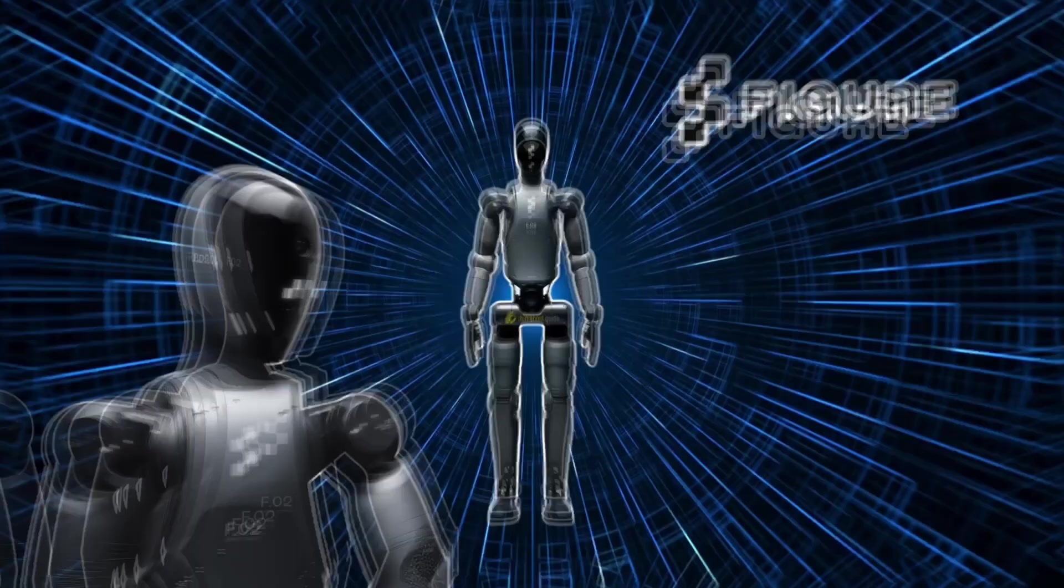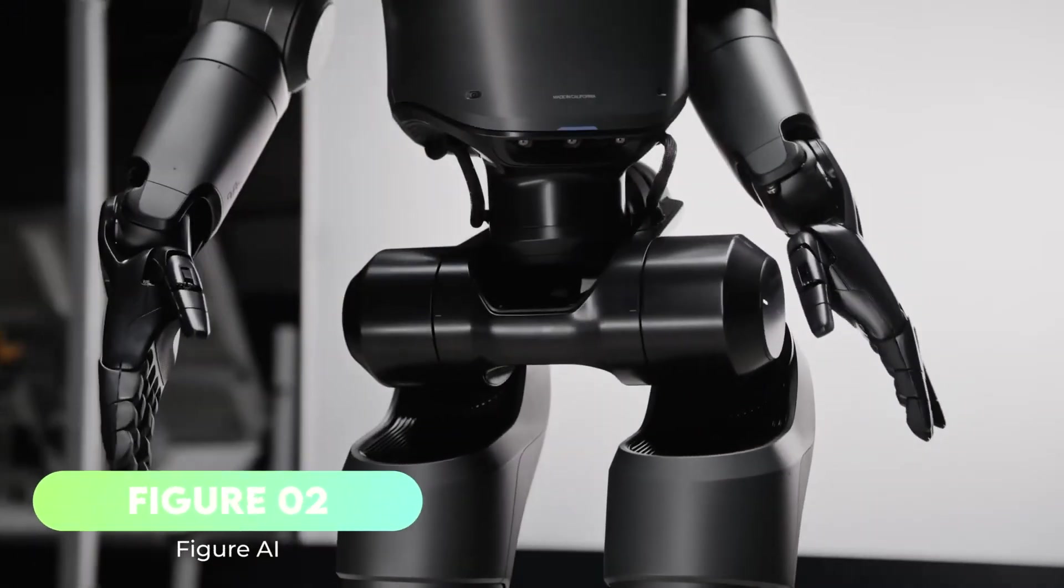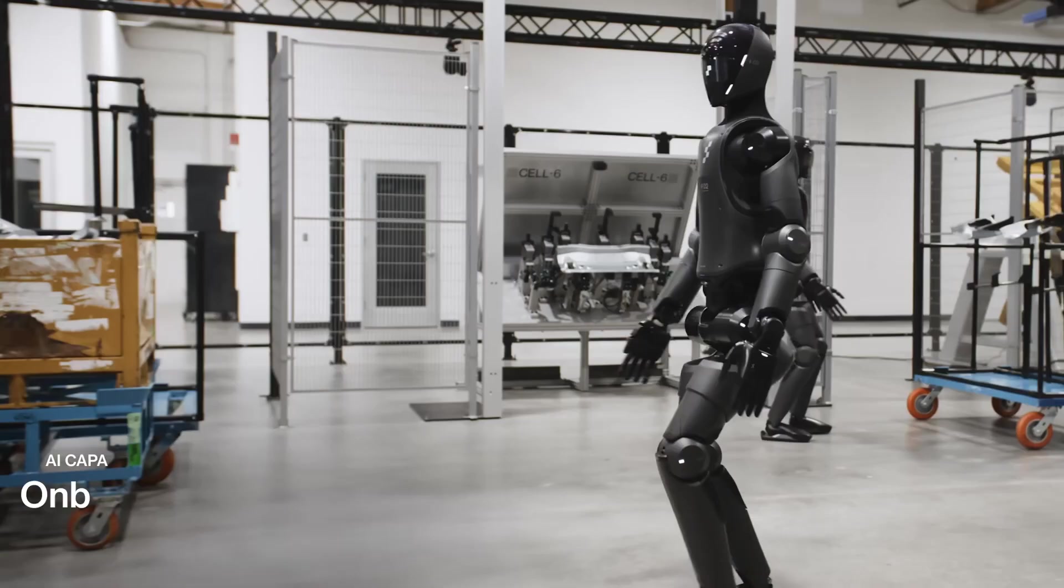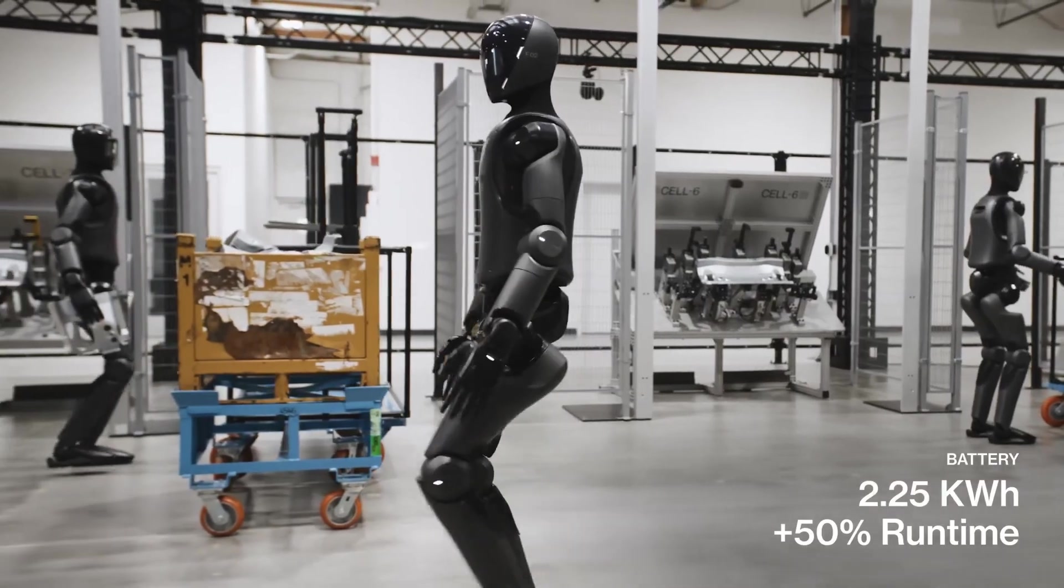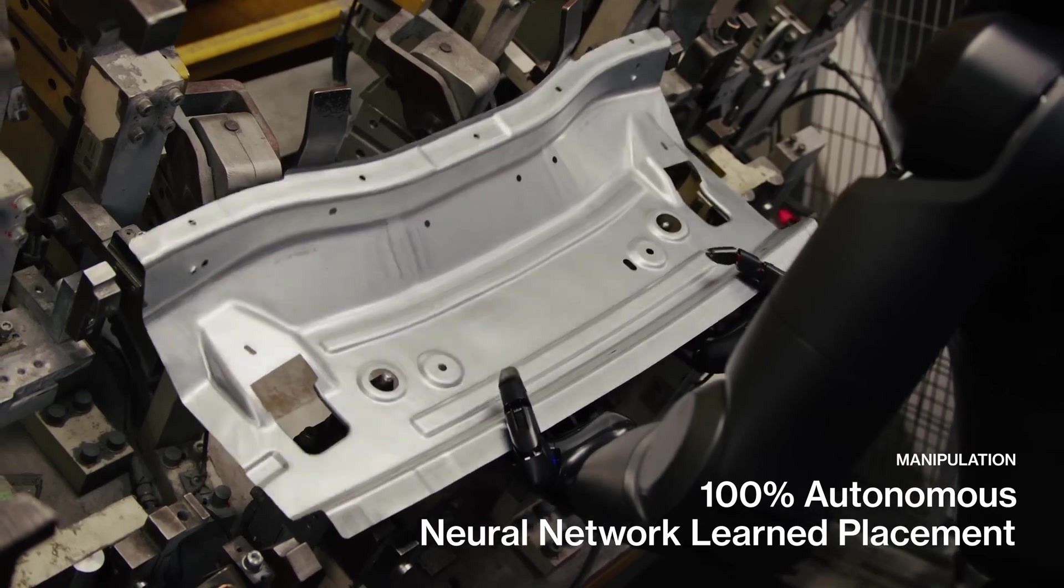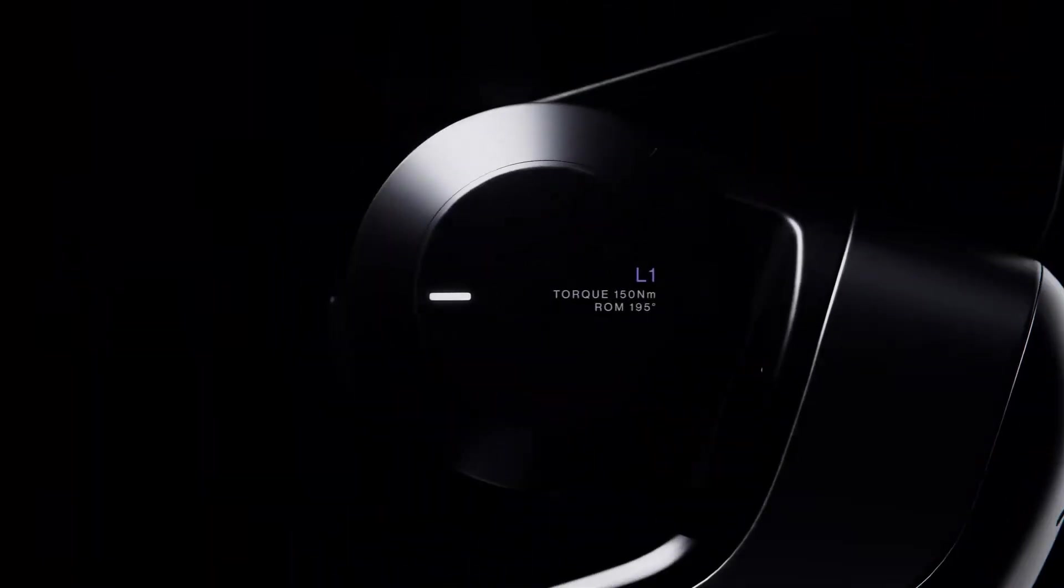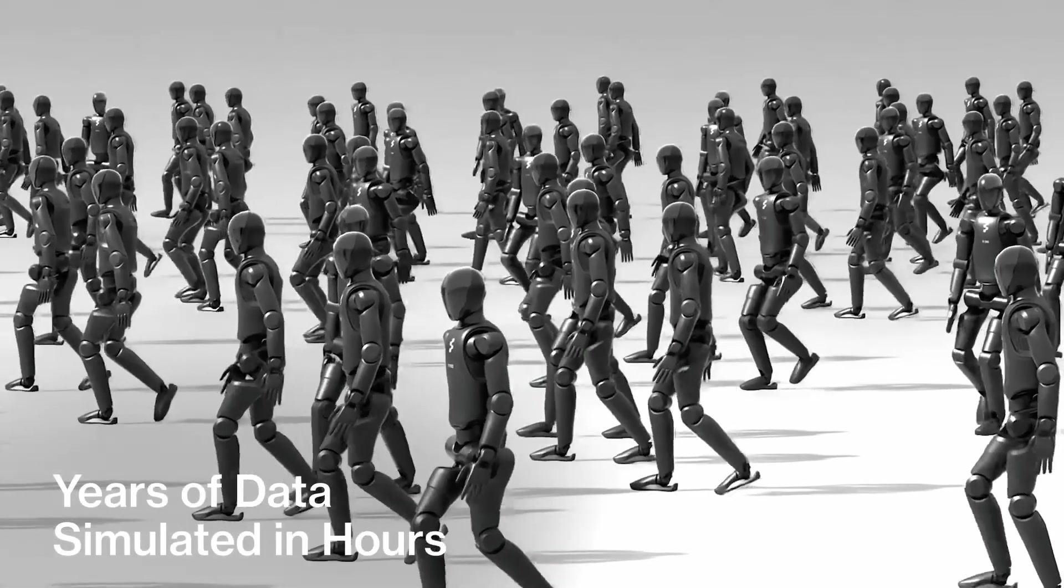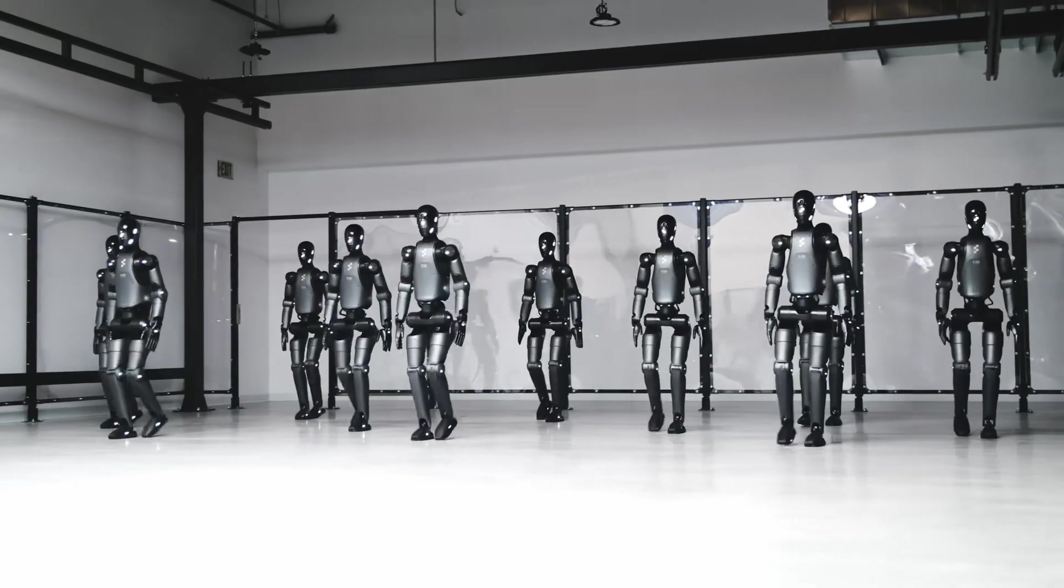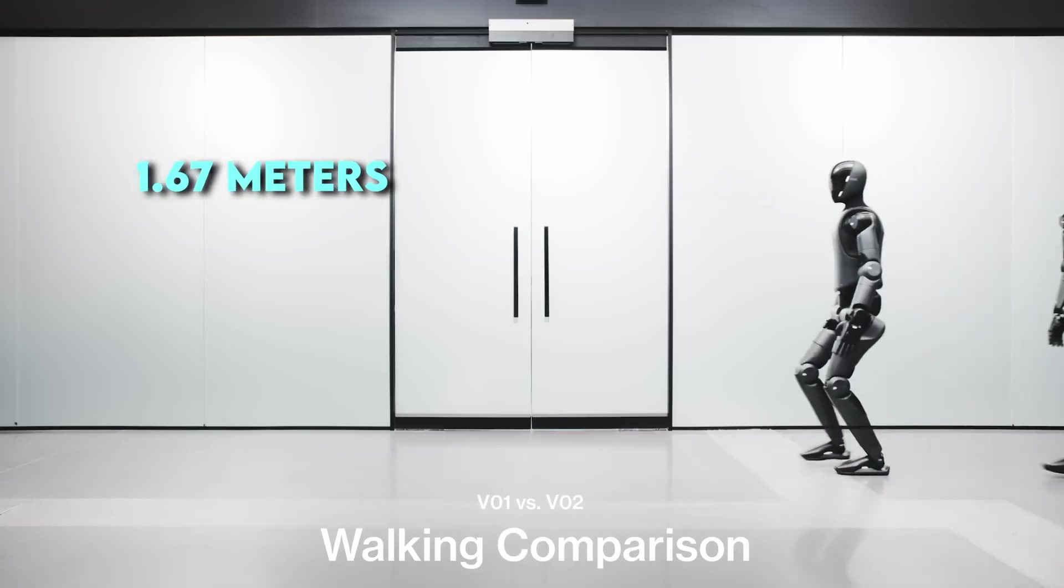Number 6: Figure 02 by Figure AI. Figure AI's second-generation humanoid, Figure 02, made its debut in 2024 and quickly proved its value in industrial use. At BMW's factory in Spartanburg, the robot walked autonomously, picked parts, identified objects, and adjusted tasks on the fly, all without human intervention. Initially it ran on OpenAI's multimodal engine, but by February 2025, Figure announced it had transitioned to its own fully in-house AI platform handling vision, reasoning, and control end to end. Unofficial figures put Figure 02 at around 1.67 meters in height and 60 kilograms in weight.